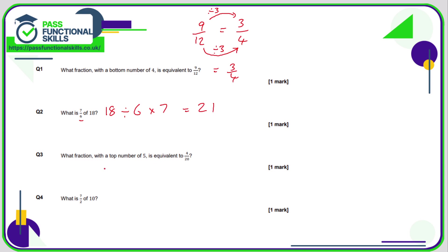Question three is a bit tricky: what fraction with a top number of five is equivalent to four out of 20? What do you do to turn a four into a five? You can't just say add one — you can't say it's going to be five over 21. We've got to see it in terms of multiplication and division. So we go backwards and simplify: four out of 20, dividing top and bottom by two gives two over ten, then dividing again by two gives one fifth.